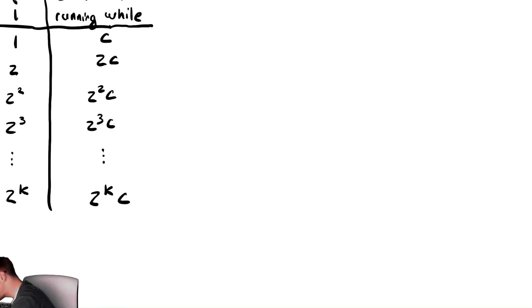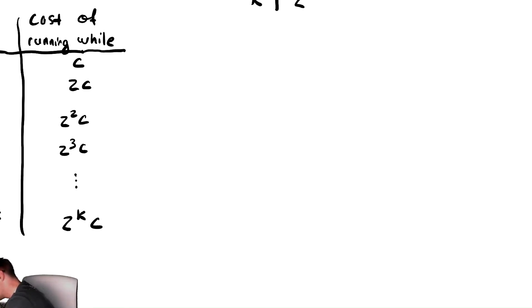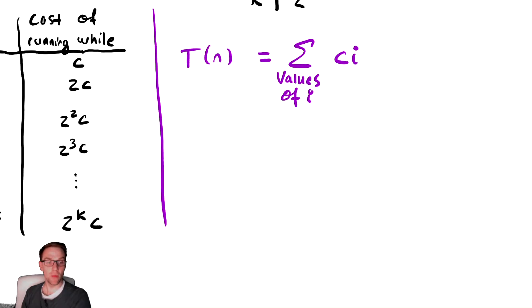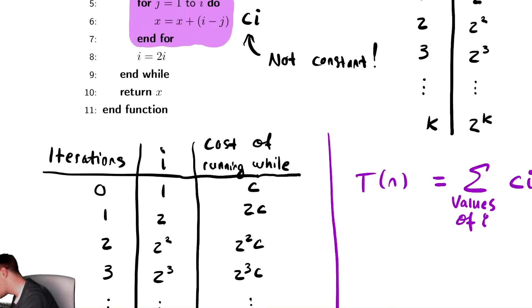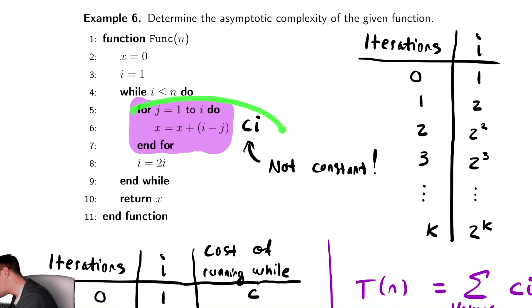So I'm going to write that symbolically. T of n, the running time as a function of n, is the sum of that column. And that column is adding up for every value of i, ci. That is what we are doing. We're taking the cost of the body of the while loop, which we called ci, and adding up over those different values of i.